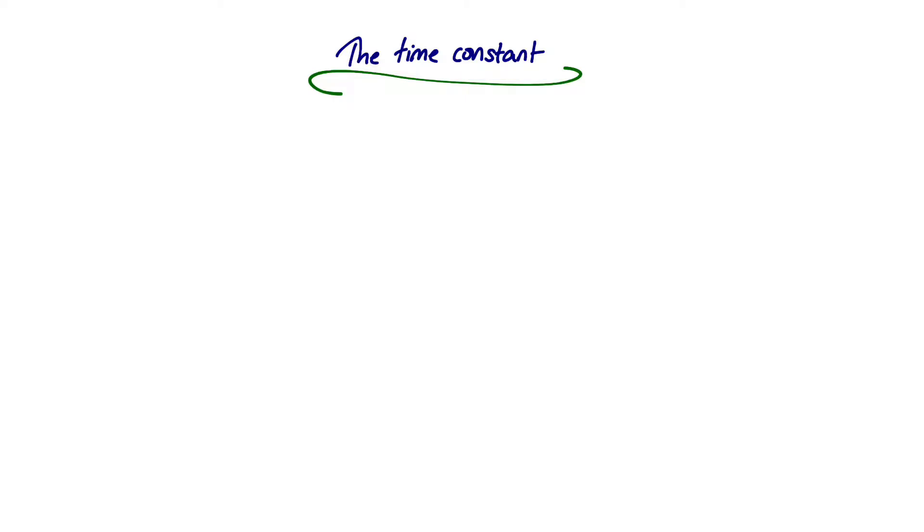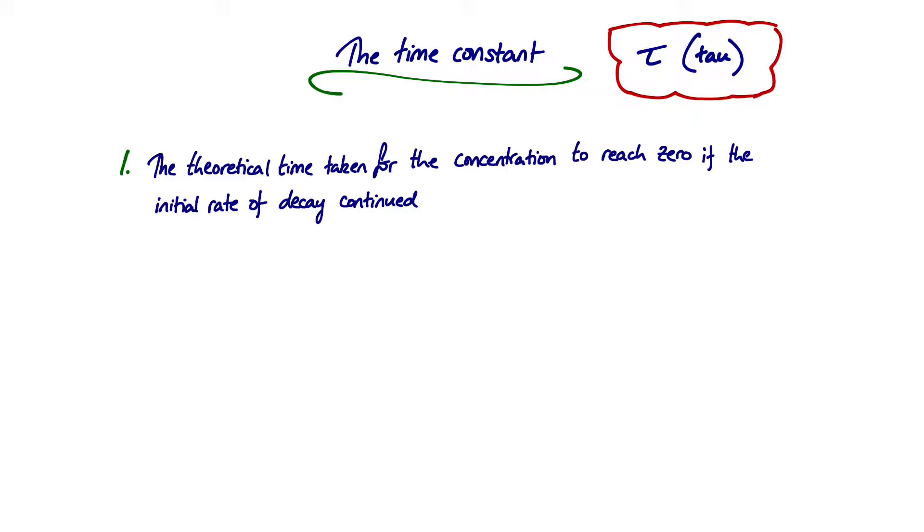Next, we look at the time constant, which is given the designation tau. The time constant is certainly less intuitive than the half-life and it has a number of different definitions, all of which are valid, but different textbooks will order them or word them differently, which adds to the confusion. The first definition is that the time constant is the theoretical time taken for the concentration to reach zero if the initial rate of decay continued. Important to note here is that this is a theoretical time, because as decay occurs and your plasma concentration falls, by definition in first-order kinetics, you will get a change in rate. This is not something we can carry out an experiment and measure. This is a mathematical concept.